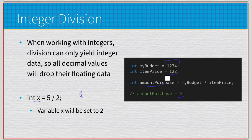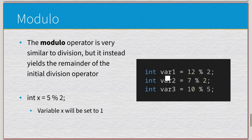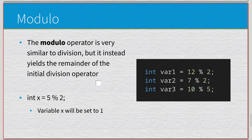Integer division has benefits when you want to know how many times something goes into a number and don't care about the decimal. But if you do need the remainder or fractional part of division, do not use integers — use floats or doubles. When you're dealing with integers and want just the remainder, that's where the modulo operator comes in. Similar to division, but instead of the quotient you get the remaining data. So x = 5 % 2 gives you 1, because 2 goes into 5 twice with 1 left over.